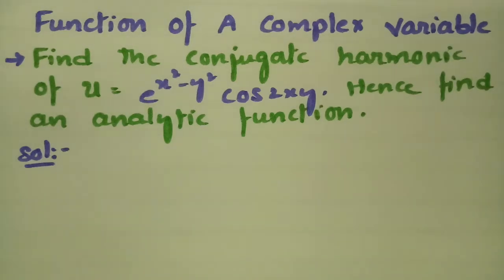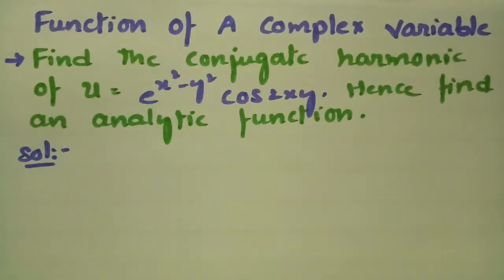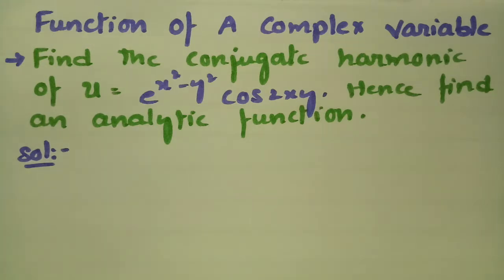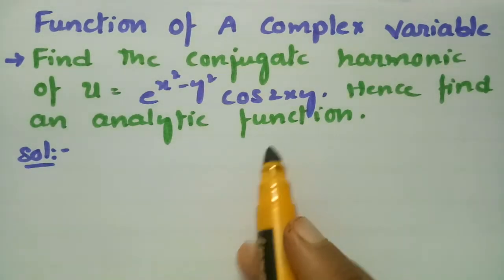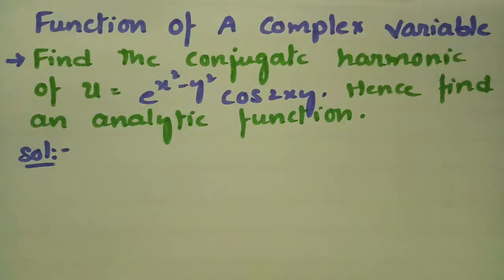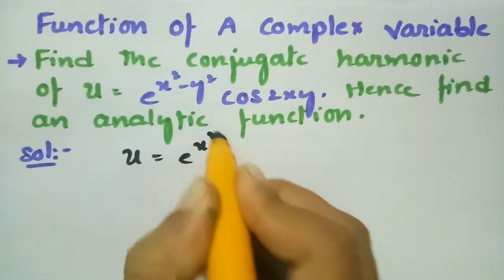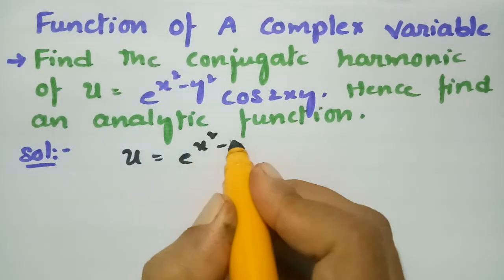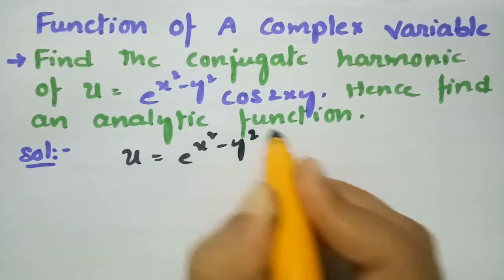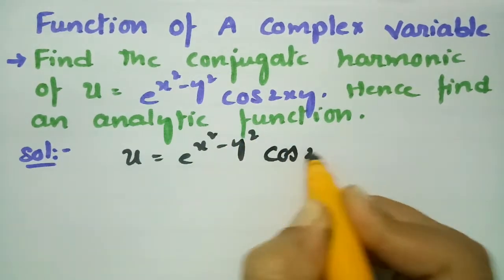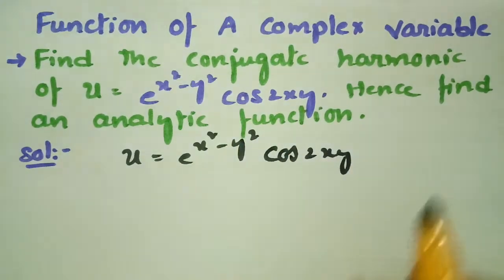Today's video is on a problem based on functions of complex variables. I am going to find the conjugate harmonic function of u and also find an analytic function. Here u is given as e to the power of x squared minus y squared into cos of 2xy.